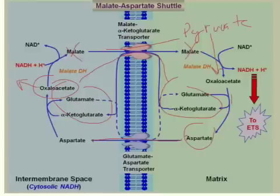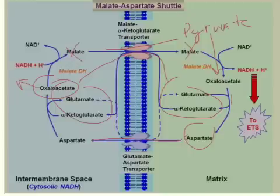One last thing to note about the malate-aspartate shuttle is that it uses two different transporters: the malate alpha-ketoglutarate transporter and the glutamate-aspartate transporter. It could have been called the alpha-ketoglutarate glutamate transport shuttle, but it was decided to call it the malate-aspartate shuttle.